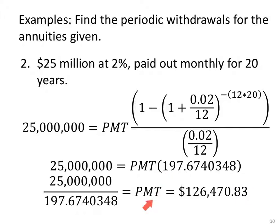To get PMT by itself, we're going to divide $25,000,000 by 197.6740348. I use all those decimals here. I don't round. I don't take a shortcut because I want this exact answer at the end. Use all the decimals here, only round at the very end, so you get a more exact answer. That's not bad. Win $25,000,000, get $126,470 a month.